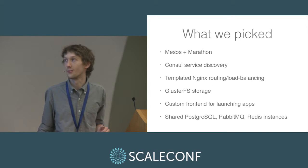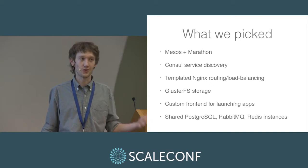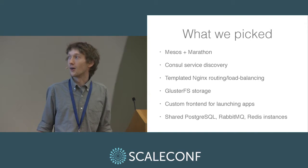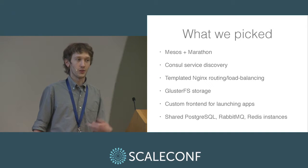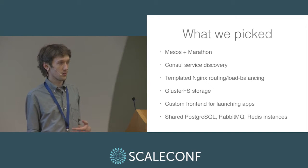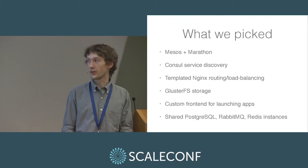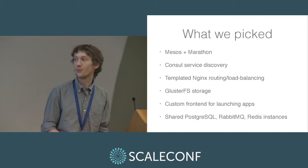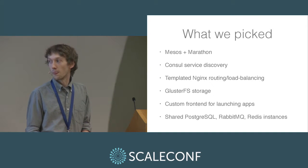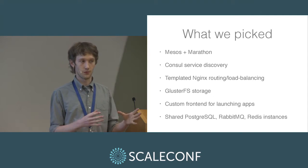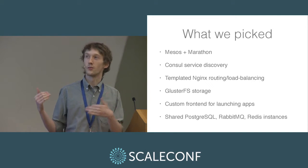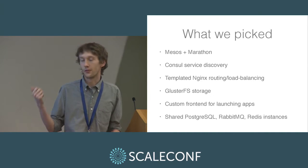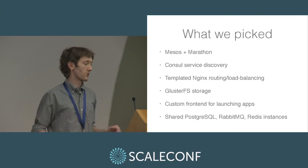Just to summarize what we picked: Mesos and Marathon — we've been meaning to try some other things that run on top of Mesos but Marathon works great. We've got Consul for service discovery, and then we're using Nginx to route and load balance. We looked at a proxy but it's a little bit more difficult to get it to reload smoothly. We're using GlusterFS for storage, mostly because we had previous experience with it in our organization. Then we built a custom front end for launching apps on this platform because Marathon is not quite the right level of abstraction. And we have a bunch of shared services still running on adjacent nodes in the cluster.